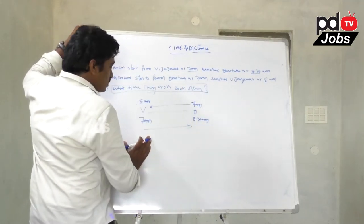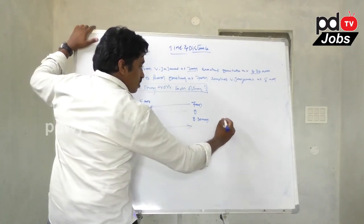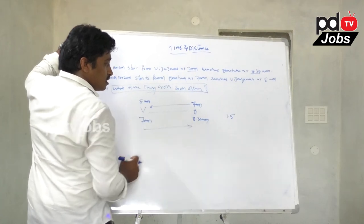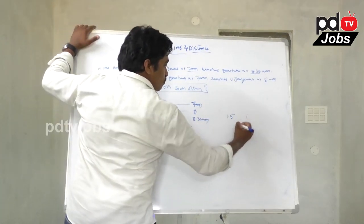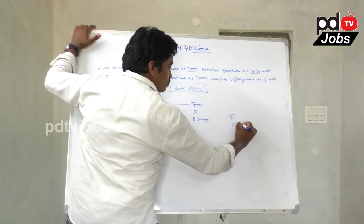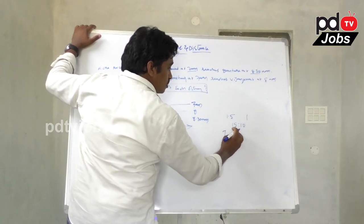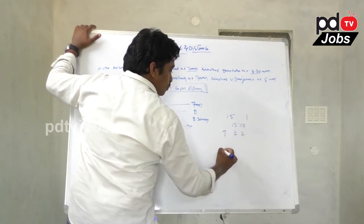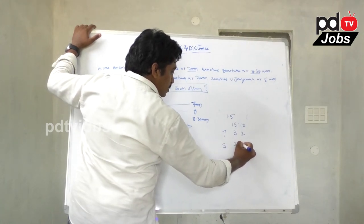The time for person 1 is 7 AM to 8:30 AM, which is 1 and a half hours. The time for person 2 is 1 hour. The time ratio is 3 to 2 — that is, 1.5 hours to 1 hour, simplified to 3:2. Since speed is inversely proportional to time, the speed ratio is 2 to 3.